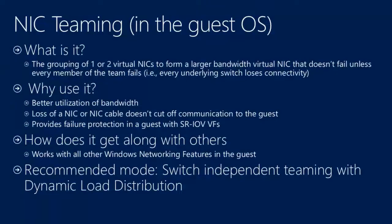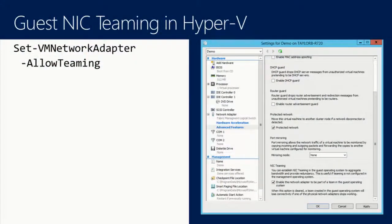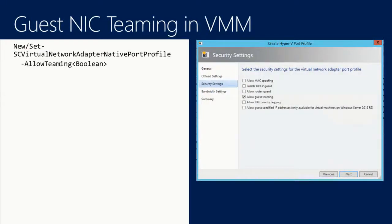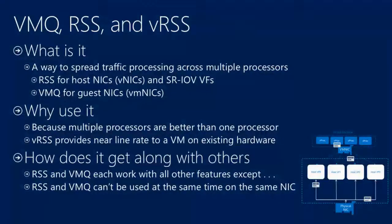Guest NIC teaming works with all features that work in the VM. The recommended mode is the same as on the host. To turn it on in the UI, there's a checkbox at the bottom, or via PowerShell: Set-VMNetworkAdapter -AllowTeaming. In VMM there's a single checkbox or PowerShell command. How many of you have played with guest NIC teaming? Nice to know it's getting used somewhere.